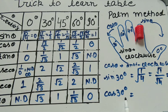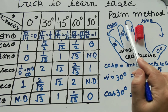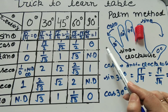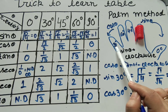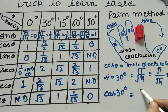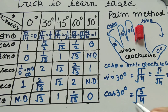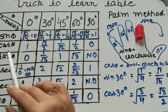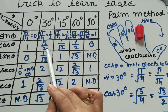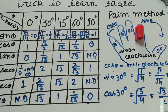For cos 30°: hide 30 degree and move anticlockwise. We count 1, 2, 3 fingers. Numerator is 3, denominator is 4, apply square root: √3/√4 = √3/2. Matching the table: cos 30° = √3/2. Same values confirmed.